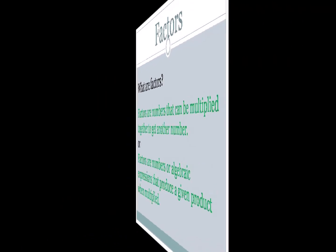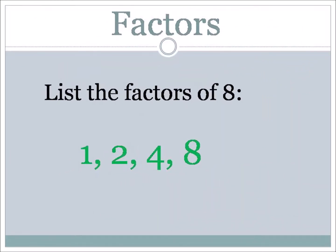Let's go back to the word problem and list the factors of 8. The factors of 8, beginning with 1, are: 1, 2, 4, and 8. One is always a factor of any number. Those numbers can be divided into 8 without a remainder — that's why they are factors of 8.